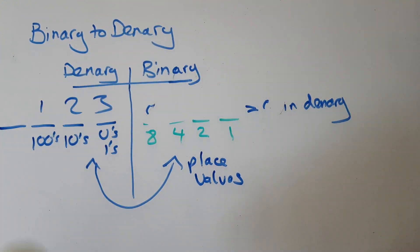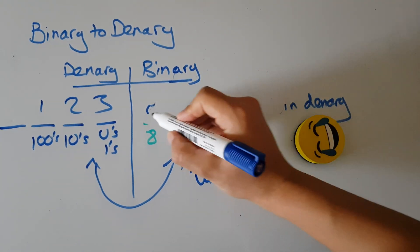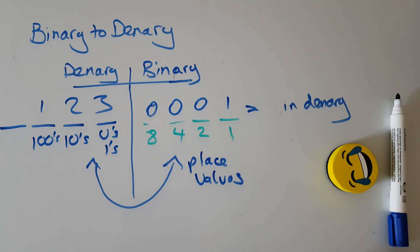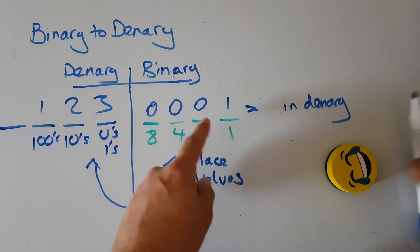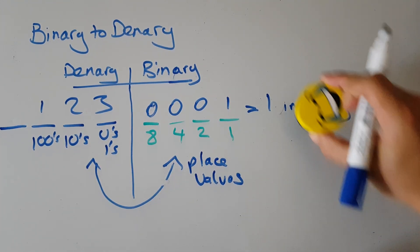Let me switch on one of the place values. So 0001. I've only got one place value switched on - it's the one that's got a value of one. Therefore, 0001 in denary must be one. Let's try another one.